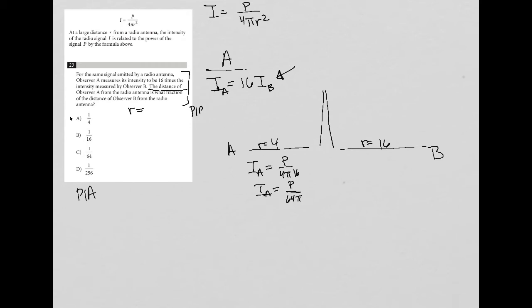And for IB, I'd have P over 4π times 16 squared, which is 256. And then 256 times 4, 250 times 4 is 1000, 6 times 4 is 24. So I'd have P over 1024π for IB.